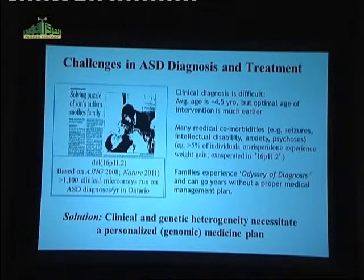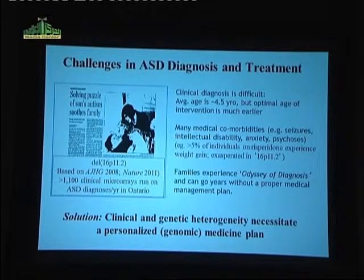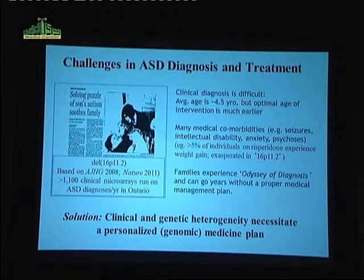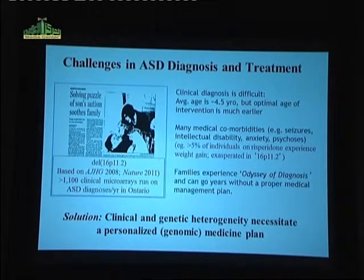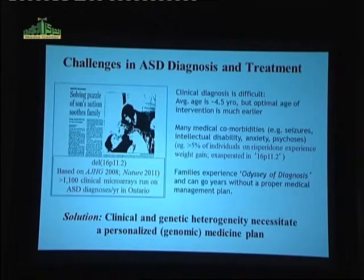This is an example of a chromosome 16p11.2 deletion we identified a few years back. This child has significant obesity. Once we identified he had the deletion, we changed the anxiety drug from risperidone to another brand, which led to a massive reduction in his weight and he started to behave much better. He improved significantly. Many of these families go through a so-called odyssey of diagnosis — this kid went through eight different clinics before he got a proper diagnosis.